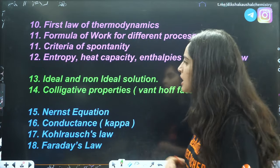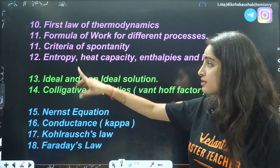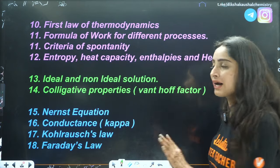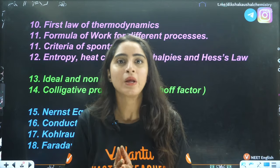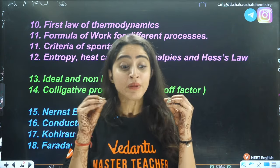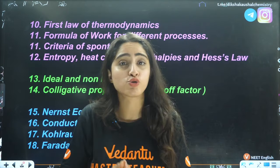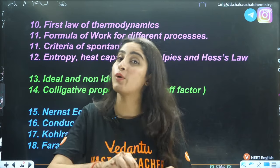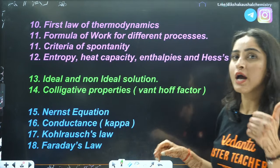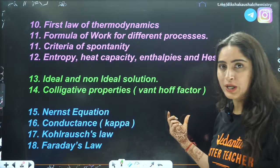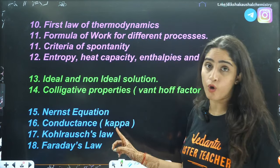Next is the solutions chapter — class 12th physical chemistry. Predictable questions include ideal and non-ideal solutions, where they can ask examples of ideal vs. non-ideal, or about maximum and minimum azeotropes. Questions on abnormal and normal molar mass are asked. Next is the Van't Hoff factor related to abnormal molar mass, and you need to know all four colligative property formulas including the Van't Hoff factor.